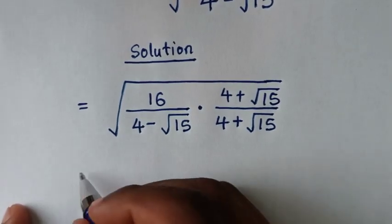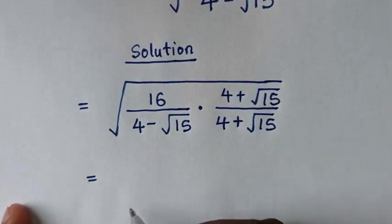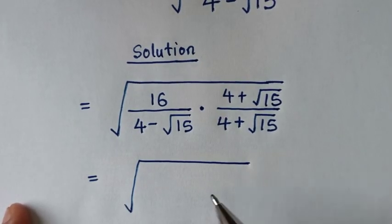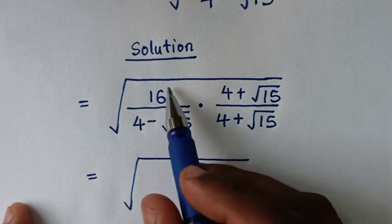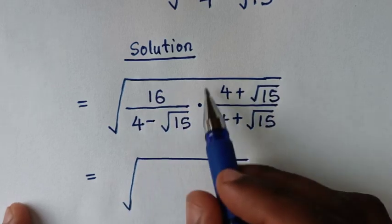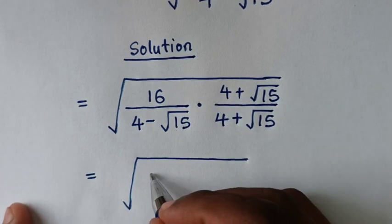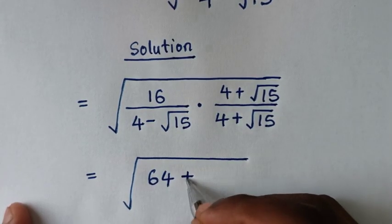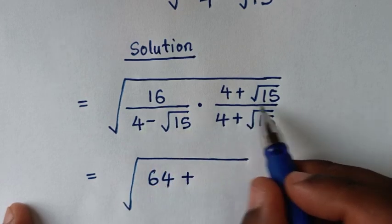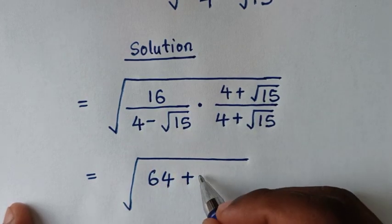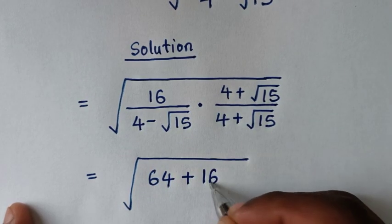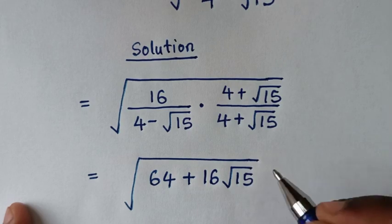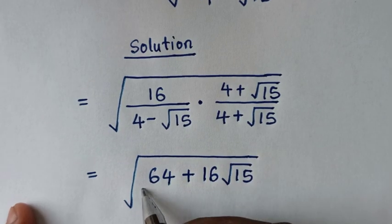Then it will be equal to square root of: here, 16 times this — so 16 times 4 is 64. Then plus 16 times square root of 15, which is 16 square root of 15. Then over the denominator.